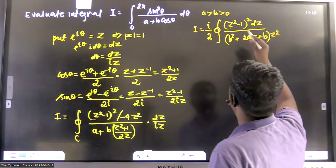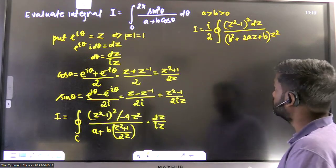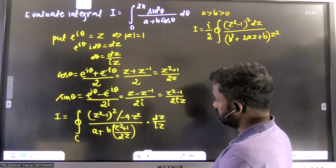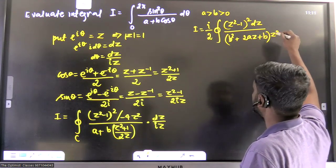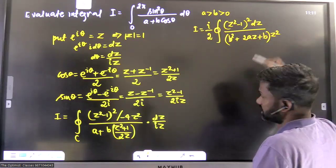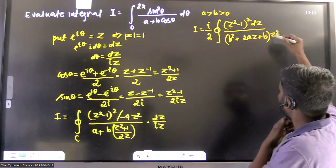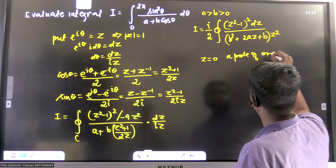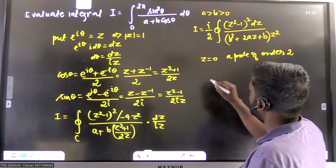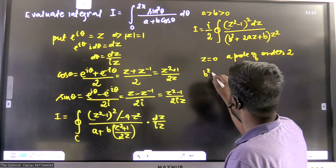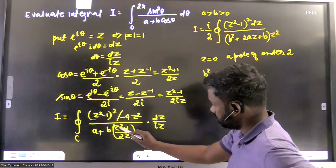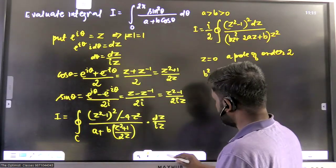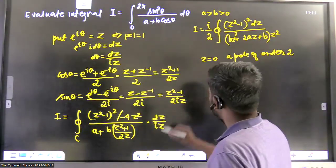We now apply the Cauchy Residue Theorem. We need to find singular points within the unit circle. The function is not analytic at z = 0, so z = 0 is a singular point — specifically a pole of order two. Similarly, the denominator bz² + 2az + b equals zero gives two more singular points.